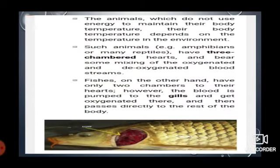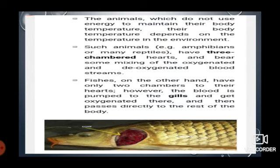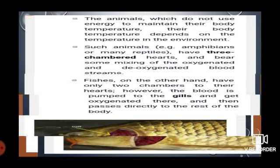Some animals do not use energy to maintain their body temperature — their body temperature depends on the environment. Such animals, for example amphibians, have a three-chambered heart and allow some mixing of deoxygenated and oxygenated blood streams. Fish, on the other hand, have only a two-chambered heart. Their blood is pumped to the gills, gets oxygenated there, and then passes directly to the rest of the body.